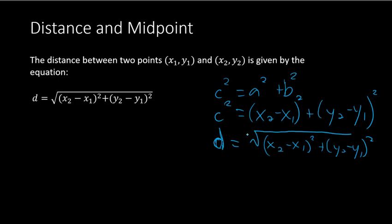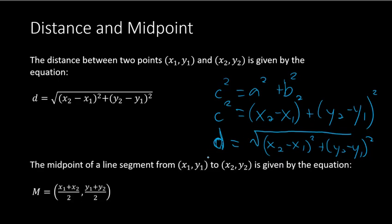We also want to show how to find the midpoint between any two points. Given points (x1, y1) and (x2, y2), the midpoint is found by averaging the x's and averaging the y's. The midpoint M equals (x1 plus x2) over 2, comma (y1 plus y2) over 2. Think: midpoint means average.